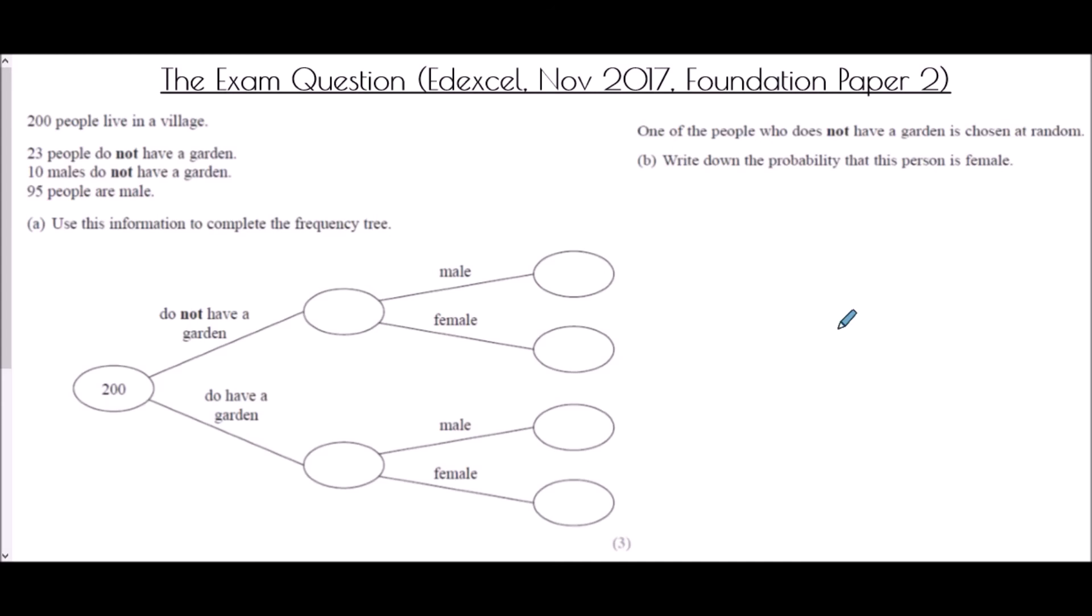And so we end with our exam question. It came from the Edexcel paper in November 2017 and it was foundation paper two. Now on that note, as it's paper two, that means we can use a calculator if you want to. So if you're not too comfortable doing the subtractions required, then just use a calculator for it. That's absolutely fine. So we have 200 people live in a village. 23 people do not have a garden. 10 males do not have a garden. 95 people are male. Use this information to complete the frequency tree. Well, the first piece of information has already been put in that there are 200 people in the village.